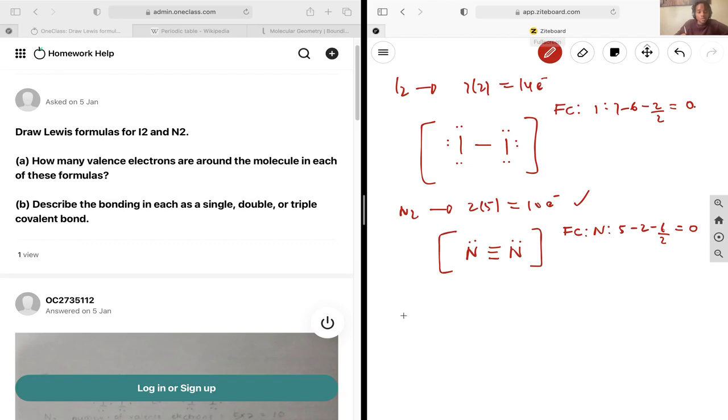Then I want to describe the bonding as single, double, or triple covalent bond. This one has a single bond between it, so the answer is single on this one.